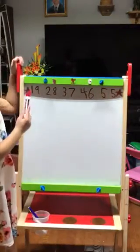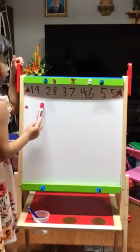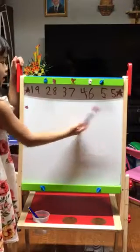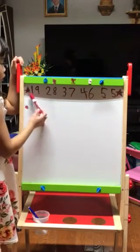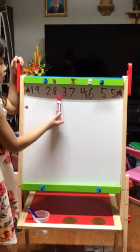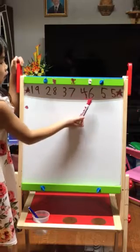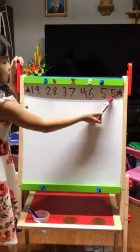But before we get started, I have to teach you these numbered pairs: 1 and 9, 2 and 8, 3 and 7, 4 and 6, 5 and 5.